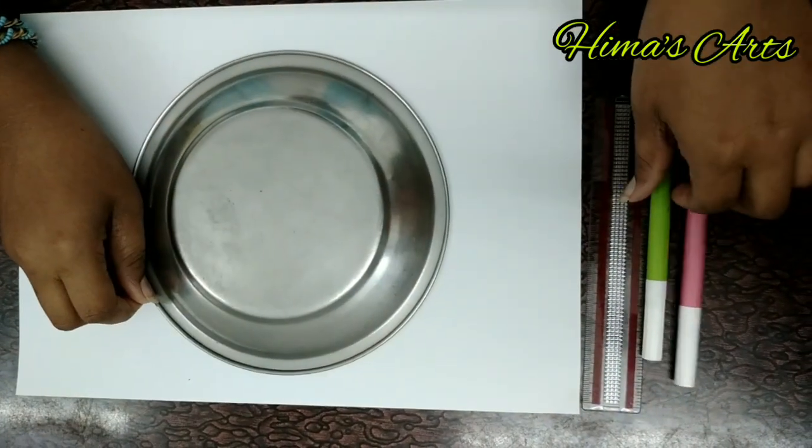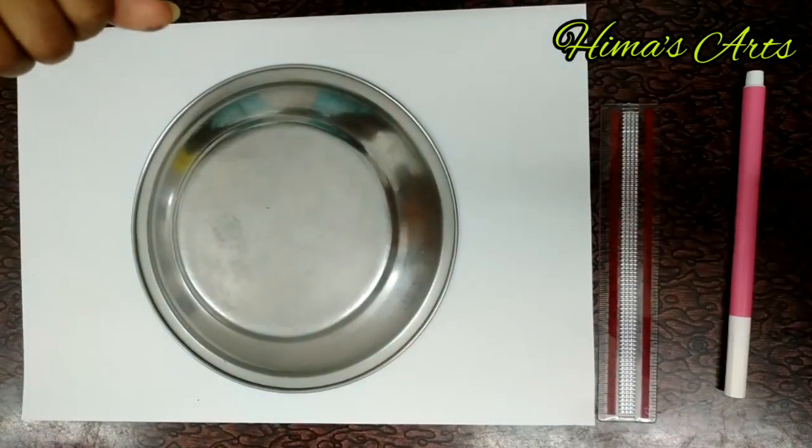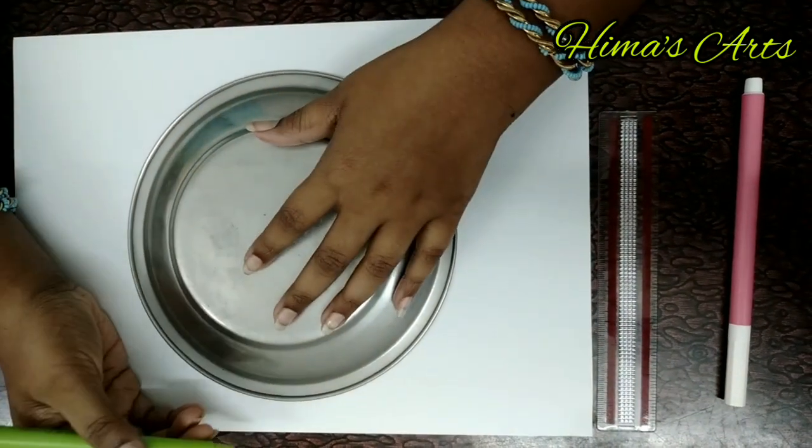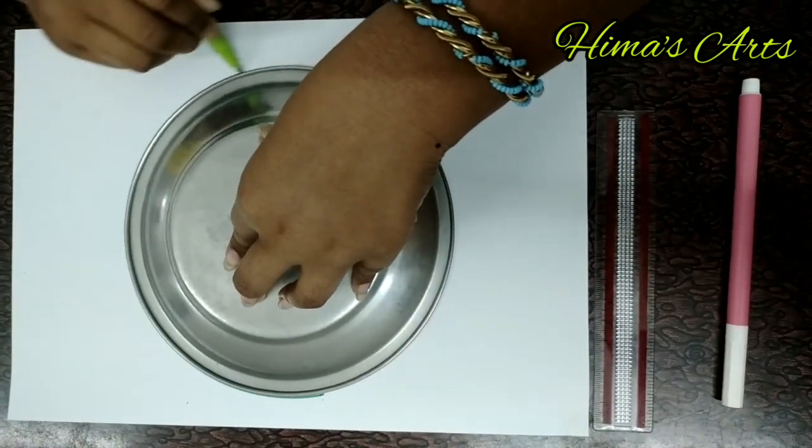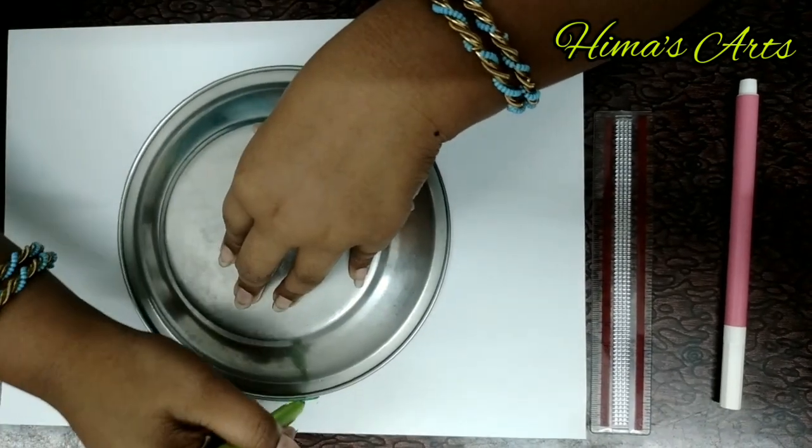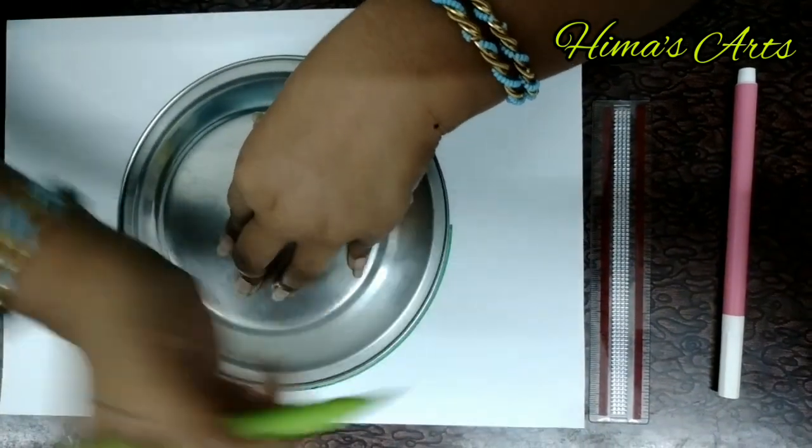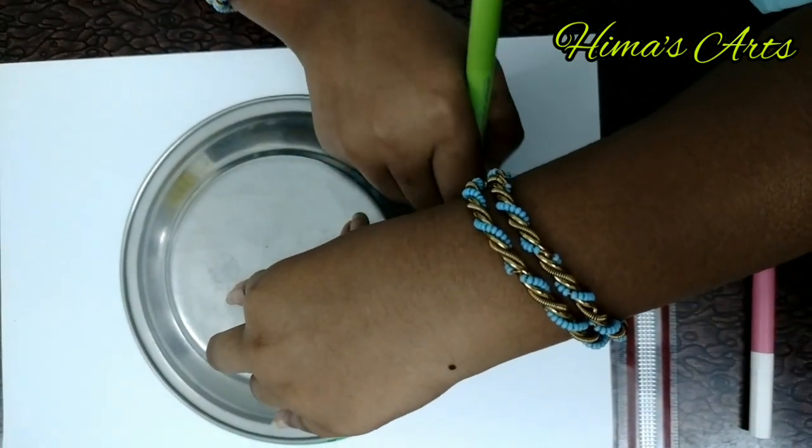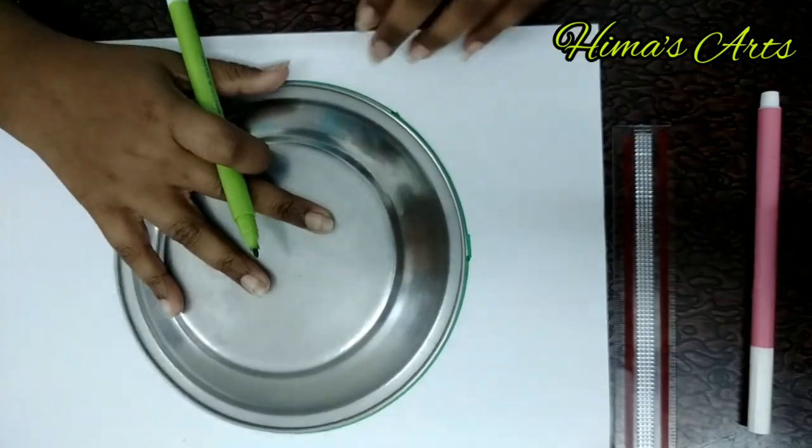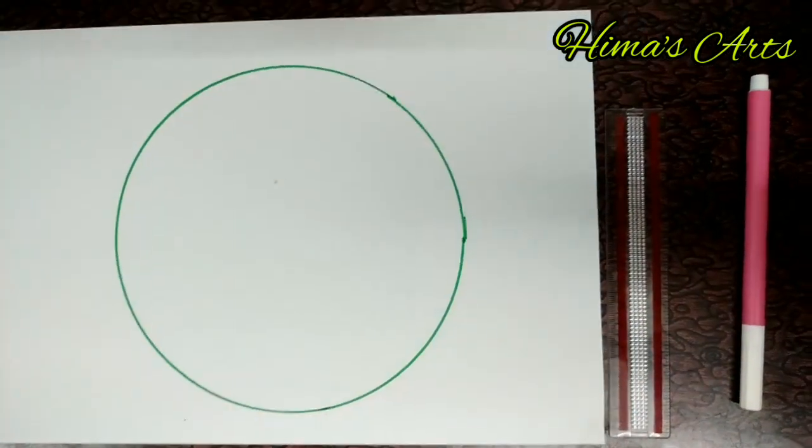Now draw one circle with a green colored sketch pencil. If you don't have a green colored sketch pencil, you can use a regular pencil. It is very easy. Now we completed the beautiful circle.